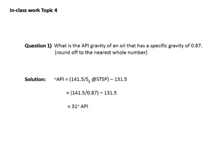The solution is degrees API equals 141.5 divided by specific gravity at standard temperature and standard pressure minus 131.5. Therefore, the solution is 141.5 divided by 0.87 minus 131.5, and the answer is 31 degrees API.